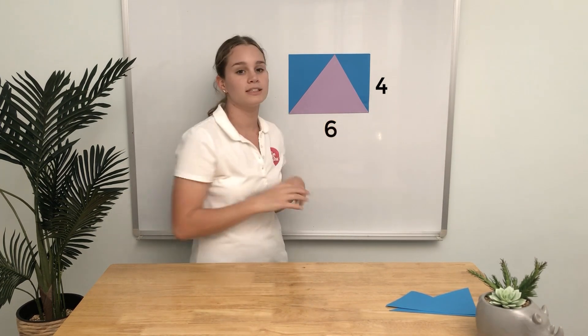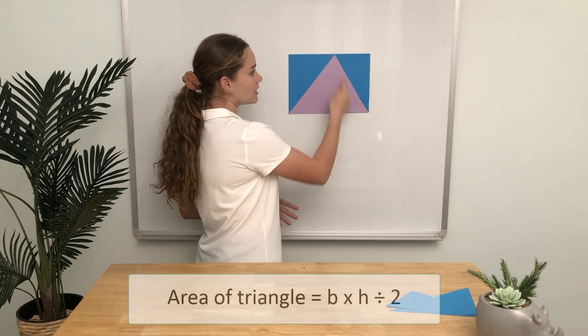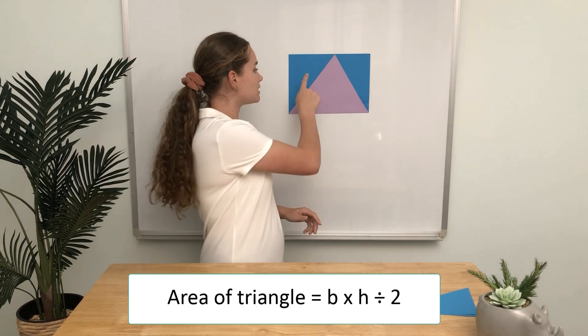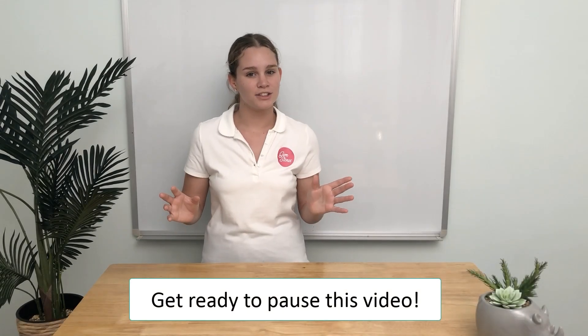If the rectangle is 4 by 6, it'd be 24 square units, which means the triangle is 12 square units. So to find the area of a triangle, it's length times height divided by 2, because it's half the size of the rectangle.